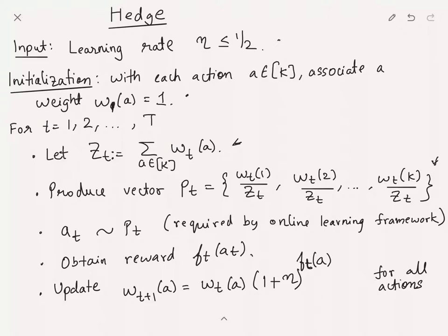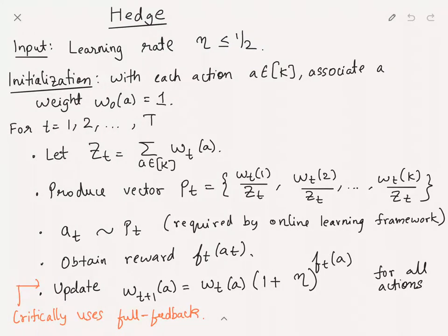You sample this action at and then the algorithm receives a reward or payoff of ft(at). Now we have to update the weights. This is why it gets the multiplicative weights update name. wt+1(a) is given by wt(a) times (1 + eta)^ft(a). It's an exponential with the base of the exponential being one plus eta and the power being ft(a) for action a. You do this for all actions.